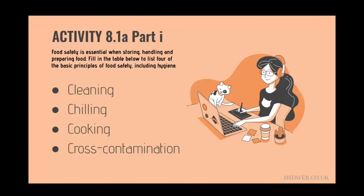Chilling refers to ensuring that certain foods are chilled properly to slow down the reproduction of bacteria and keep them safe to consume. The food packaging will indicate if it needs to be refrigerated and they should be kept at temperatures below 5 degrees Celsius.